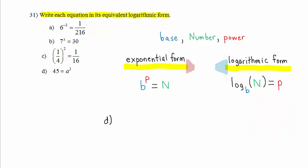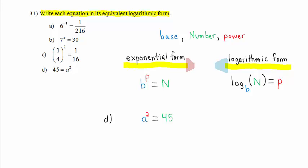Let's look at part D. A to the second power equals 45. In logarithmic form, we have log base A of 45 equals the power 2. Thus, the equivalent logarithmic form is log base A of 45 equals 2.